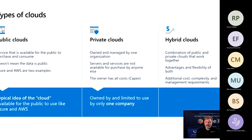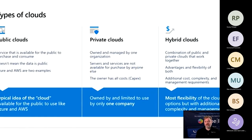Types of clouds are generally broken up into three categories. The one most of us think about when the word cloud comes to mind is the public cloud — that doesn't mean the data is public, it means the service is available for consumption by the public. Businesses and individuals can sign up for these services without doing anything special; the service is ready to go. Two examples: Azure and Amazon Web Services — also the two largest providers of cloud services.